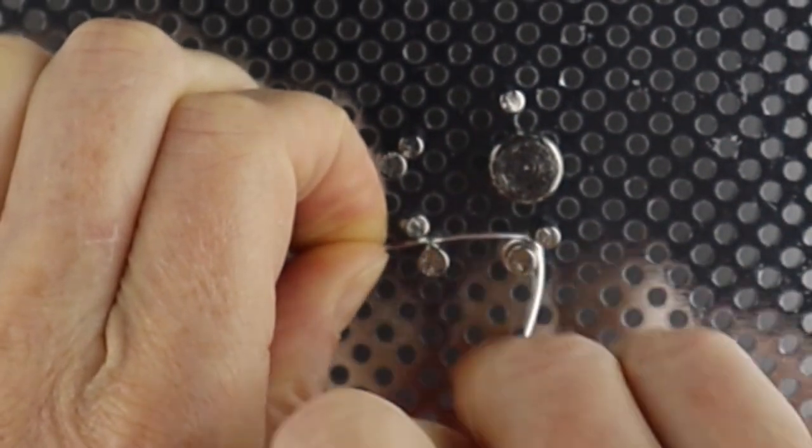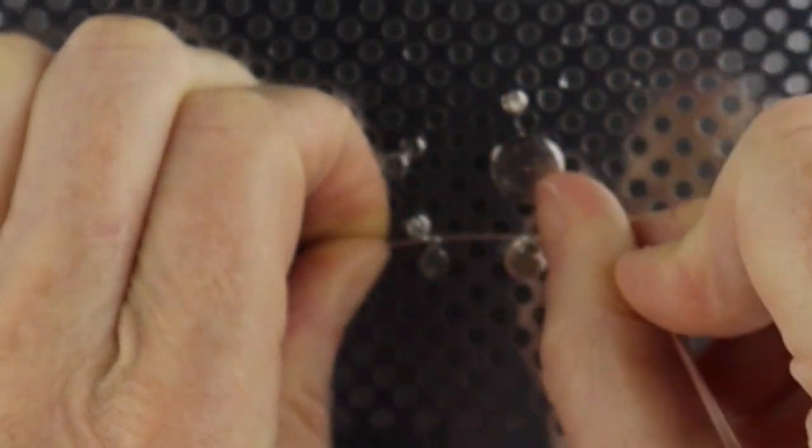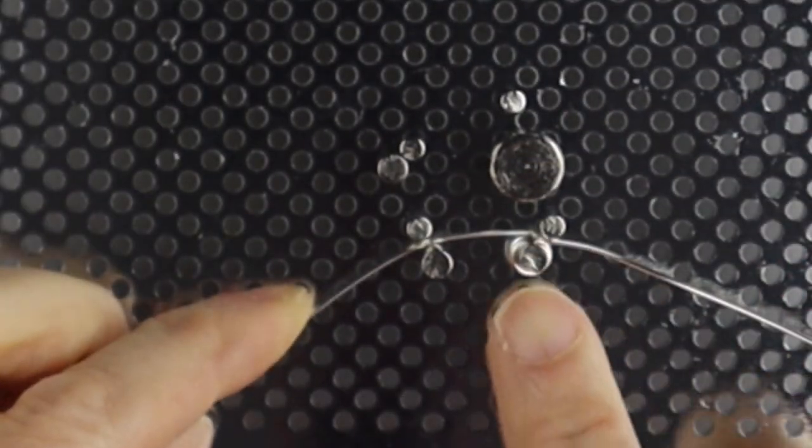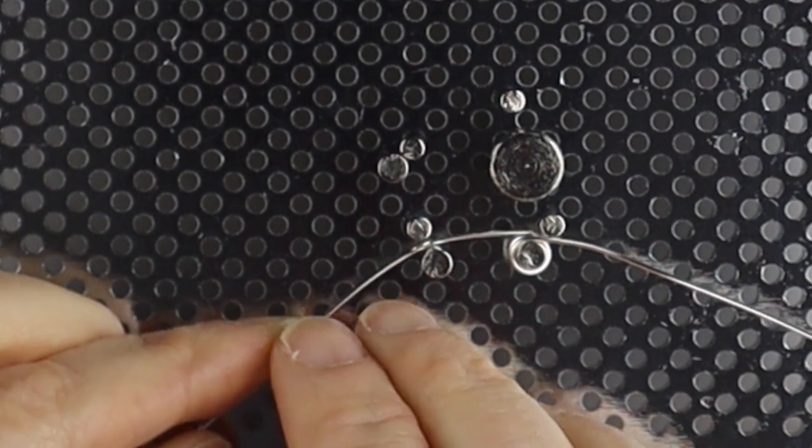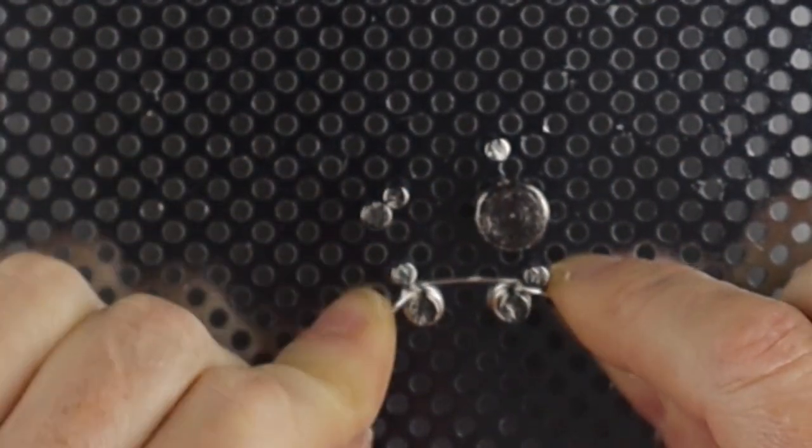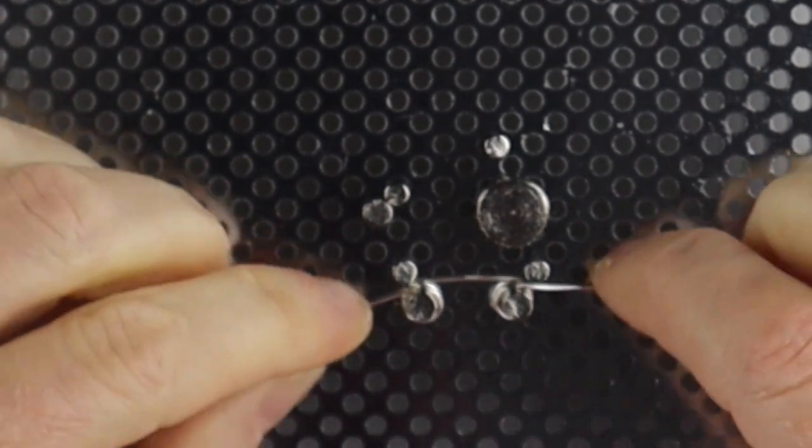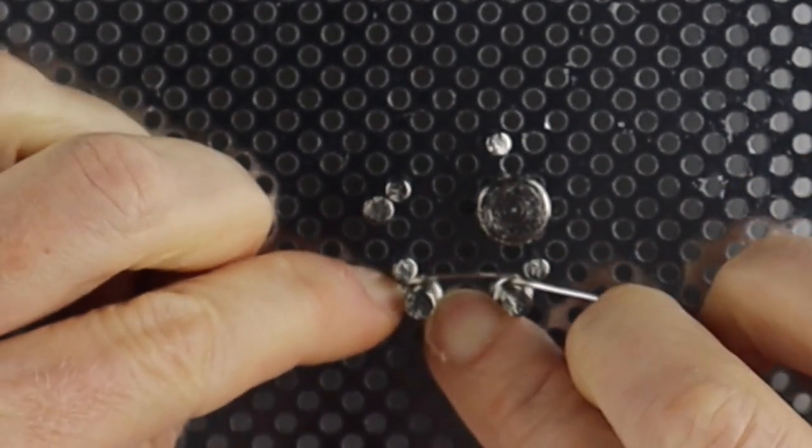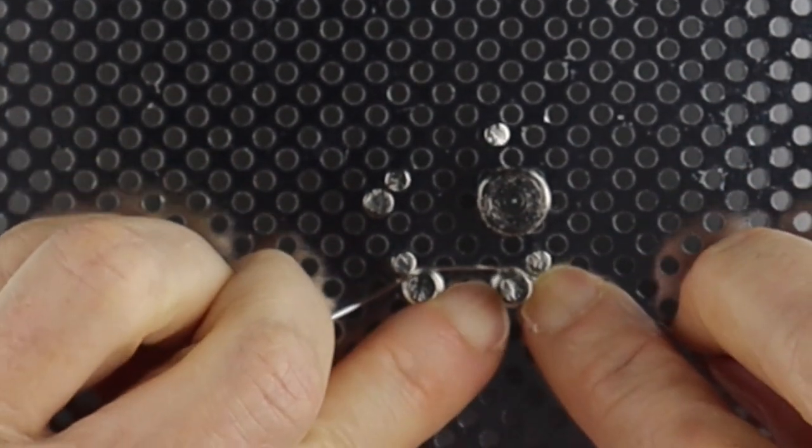It's okay if there's a little space in between—it makes it look three dimensional. And then we're going to go around once and twice.